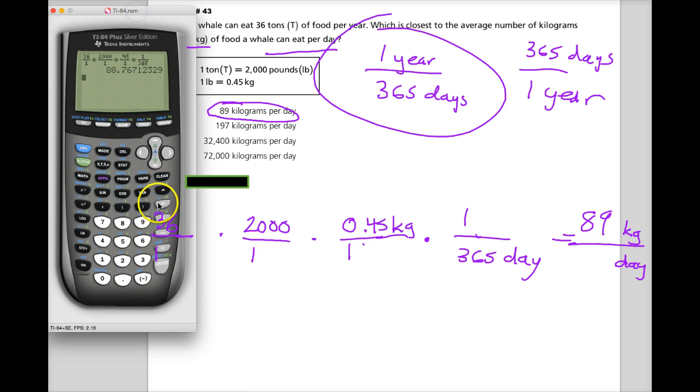Now, what's the other way to do it? Well, 36, which you can't see anymore, times 2,000 times 0.45. That's your numerator, so you might write that down. And then you're just going to divide it by 365 and get the same answer, 89. So that's it.